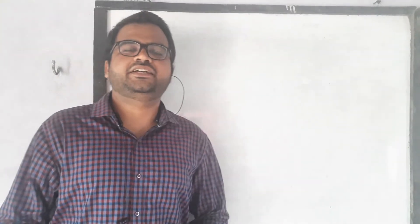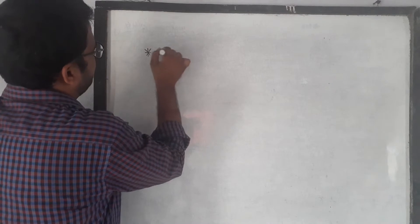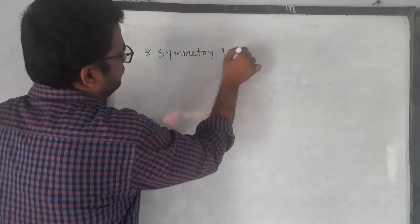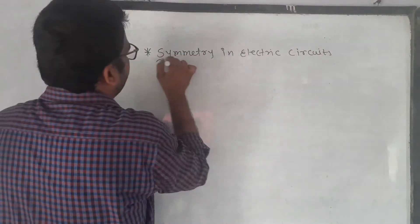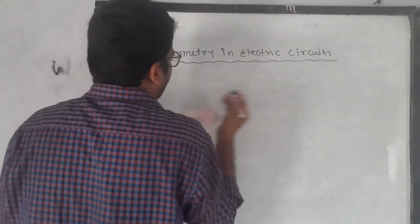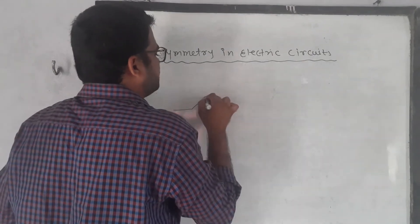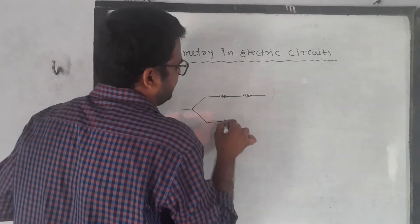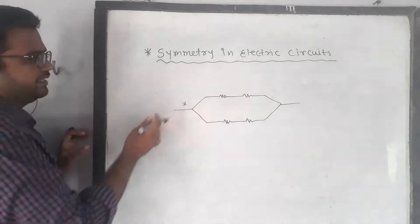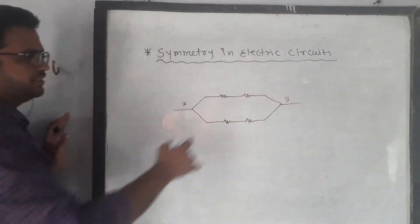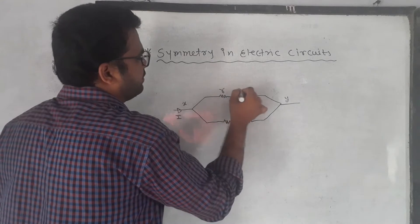Hello everyone, let's study about symmetry in electric circuits. I'm taking a very simple question first — through this example I will explain everything. We have an electric circuit with one end X connected to the battery and the other end Y connected to the same battery of potential V. The current in the circuit will be I and all resistances are R.